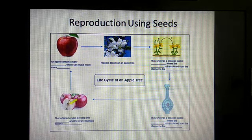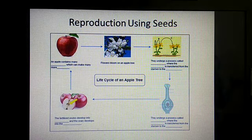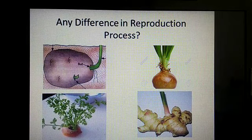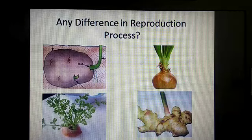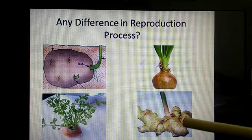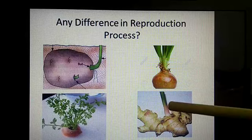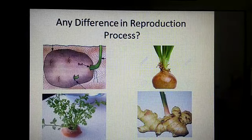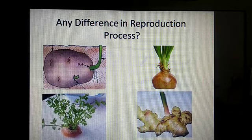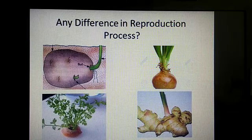Now I'm going to show you some images where some new plants are growing. Can you find any difference in the reproduction process here? There are four images shown here. One is the potato, this is onion, this is ginger, this is carrot, and you can see some new plants are developing from these structures. But are these all seeds? No, these are not seeds. Still some new plants are coming out. Isn't it interesting?